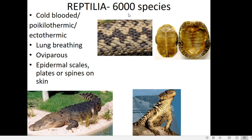We will look at the general characteristics of reptiles. The first is that they are cold-blooded, or poikilothermic, or ectothermic. These organisms cannot maintain a constant body temperature. Their body temperature changes according to the temperature of their surroundings, so they are dependent on the external environment for body temperature regulation.